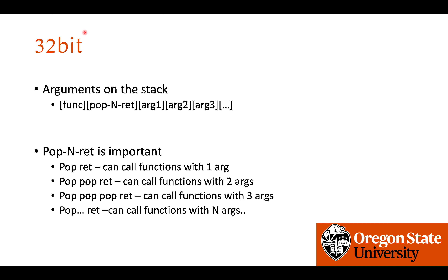In 32-bit ROP, we can put arguments on the stack. As long as we have pop n number of registers and then a return instruction — for example, pop/return, pop pop/return, pop pop pop/return — we can call functions with n number of arguments if we have gadgets to pop the registers.